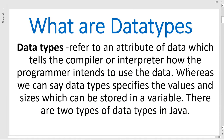What are data types? Data types refers to the attributes which tell the computer or operator how the programmer intends to use that data. We can also say that data types specify the values and the size which can be stored in a variable. So here we'll be talking about the type, the values which are stored, and also their sizes.